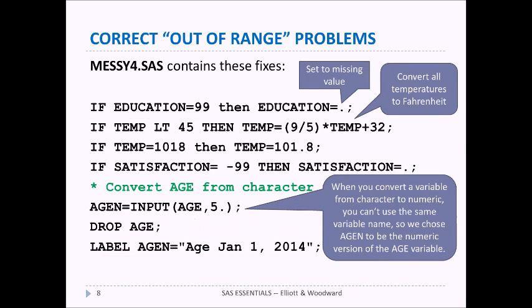Let's look at the file called messy4.sas which contains some of these fixes. First of all we set education to a missing value if it's 99. We discover by talking to the researcher that if a temperature is less than 45 we can assume it's celsius and so we can convert it to fahrenheit using this formula.